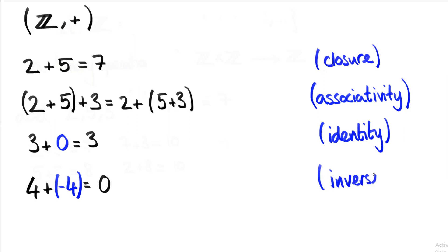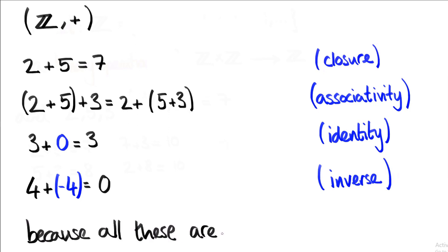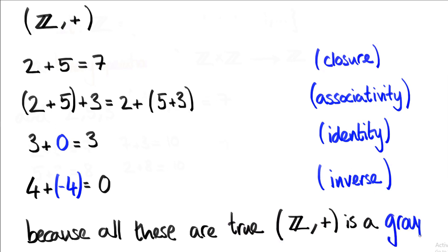So if our set and binary operation have these four properties, then we can call the pair a group. Because all four are true, our combination of the integers and addition is a group. Often you'll hear someone say that the integers under addition is a group — it just means the integers together with the binary operation of addition form a group.